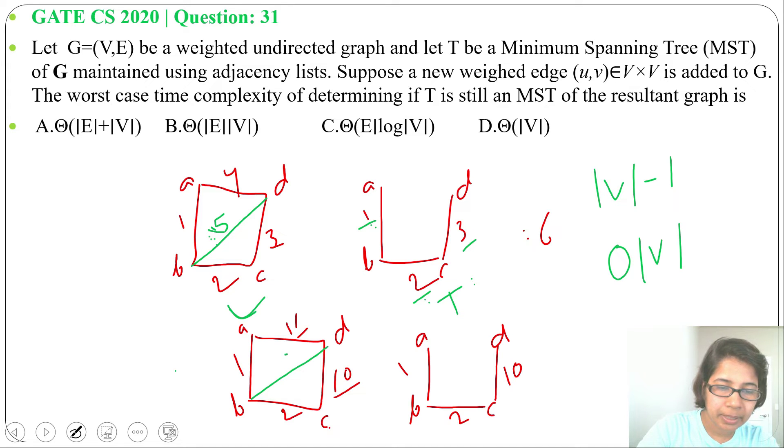Now if we add an edge B, D weight is 5, compare 5 with 1, 5 is greater, 5 with 2, 5 is greater. Now 5 with 10, 5 is less than 10. So what we'll do, we'll add B, D in the minimum spanning tree and we'll remove this edge. So we're comparing with every edge, that will be order of V.